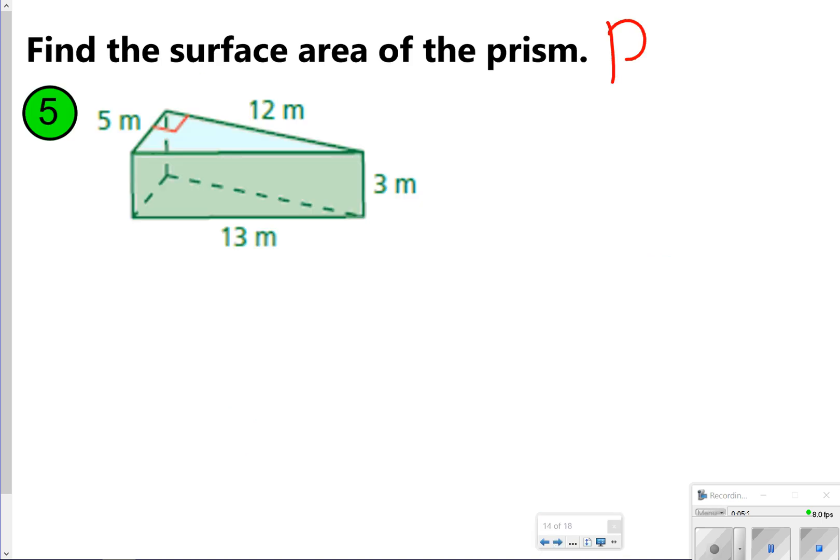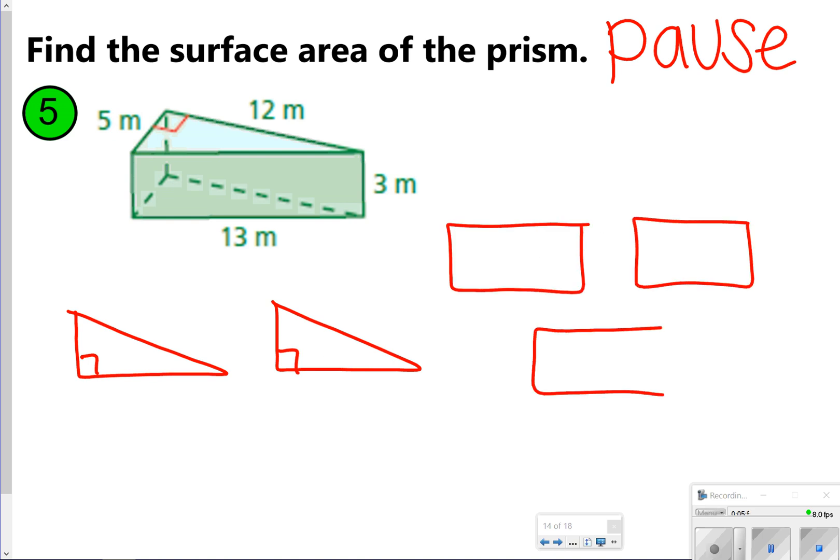Here's the one that you're going to try, so let's go ahead and try number 5 in our notes. Again, let's pause it, try it, and then click play when you're ready to check. All right, so what I'm going to do first is just draw all my shapes. I have two triangles and three rectangles. My triangle is up here, it's a 5 by 12 for both top and bottom. This rectangle here in the front, that can be a 13 by 3. The rectangle in the back can be a 12 by 3, and the rectangle here on this side can be a 5 by 3.